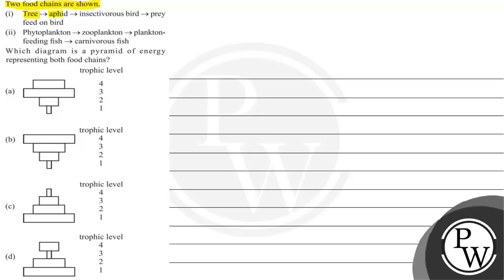First: tree, aphid, insectivorous bird, prey, feed on bird. Second food chain: phytoplankton, zooplankton, plankton feeding fish, carnivorous fishes.